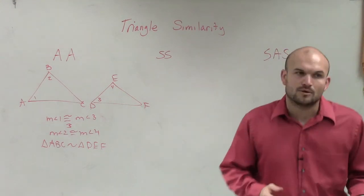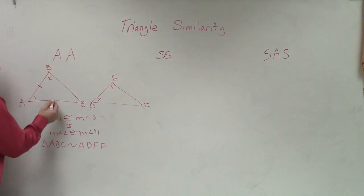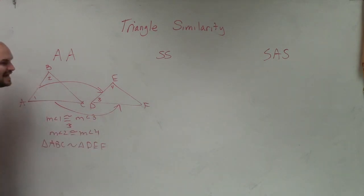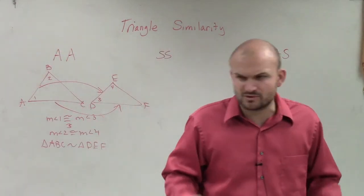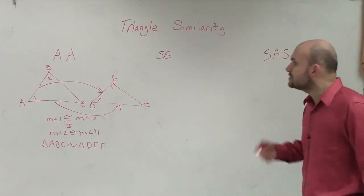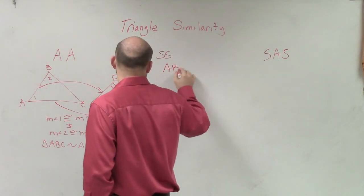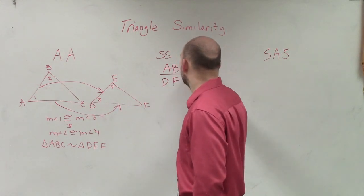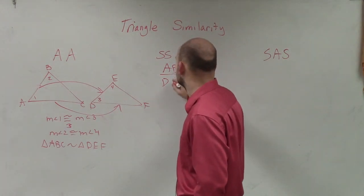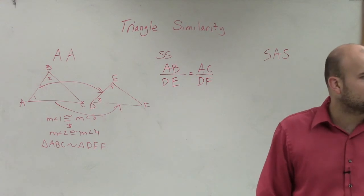Now let's look at side-side. Side-side is going to be pretty much the exact same idea. If I can show proportionately that AB is proportional to DE and AC is proportional to DF, I only need two sides. How do we show things are proportional to each other? Because that's not congruent — congruent was saying one measure is equal to the other, where we used those little hash marks. We show things are proportional by using a ratio. So if AB over DE is equal to the ratio of AC over DF, then you can show that two sides are proportional to each other.